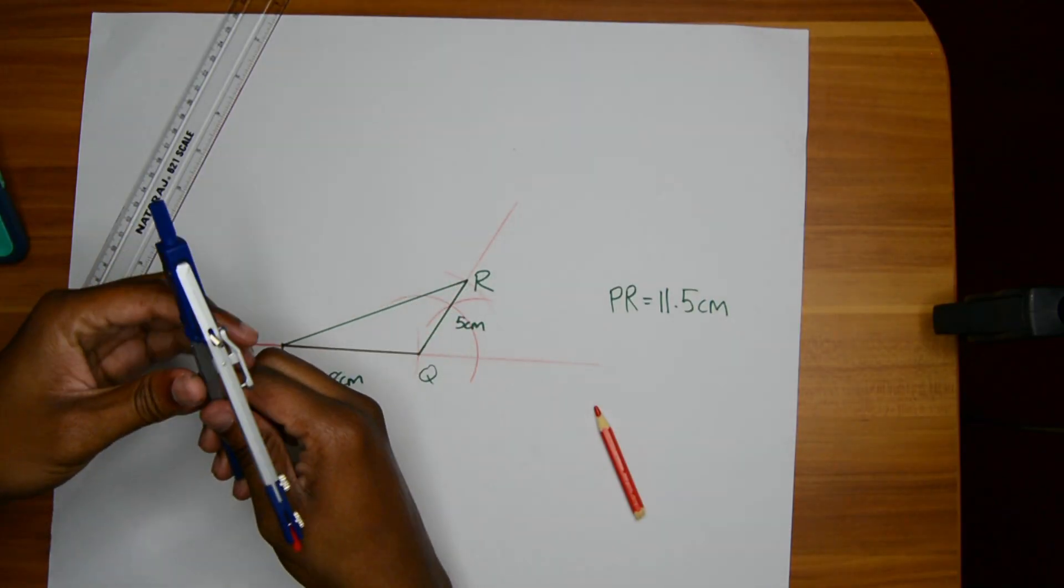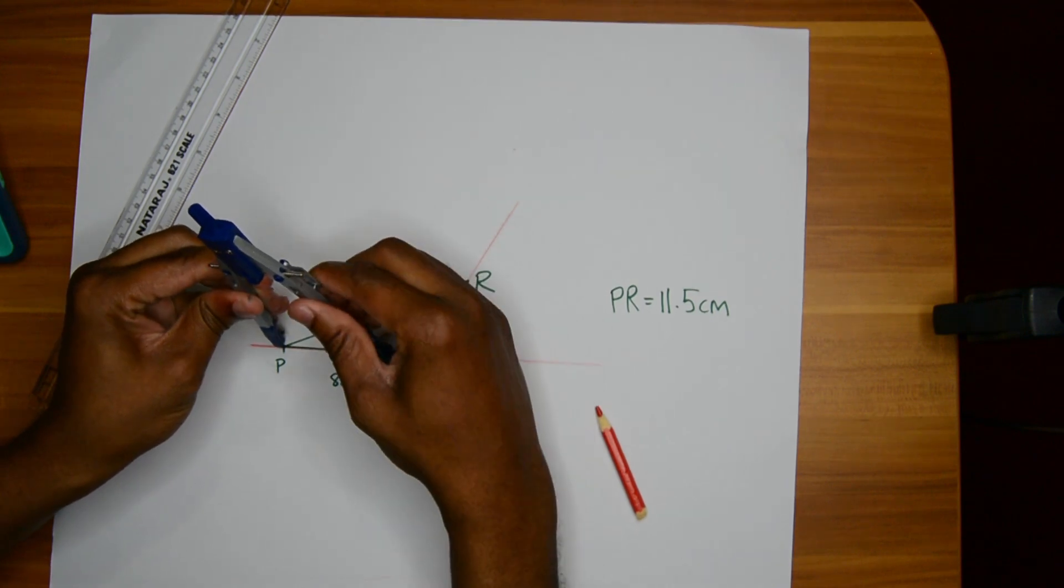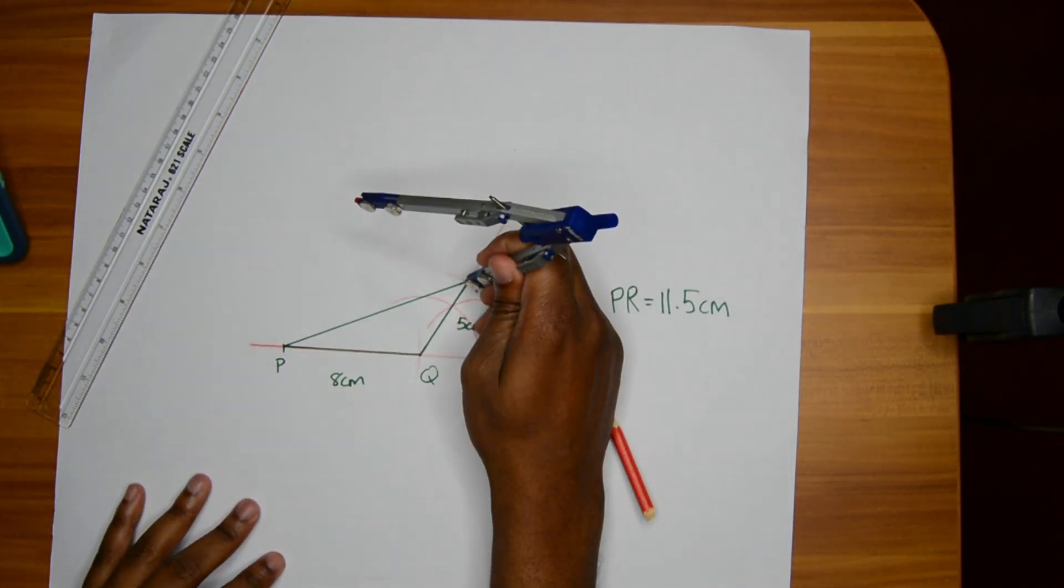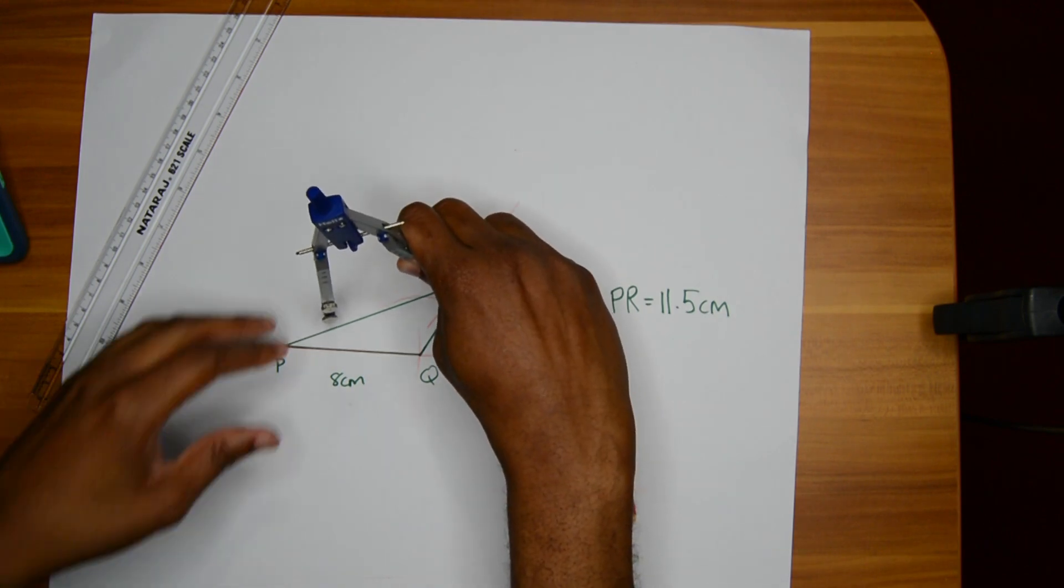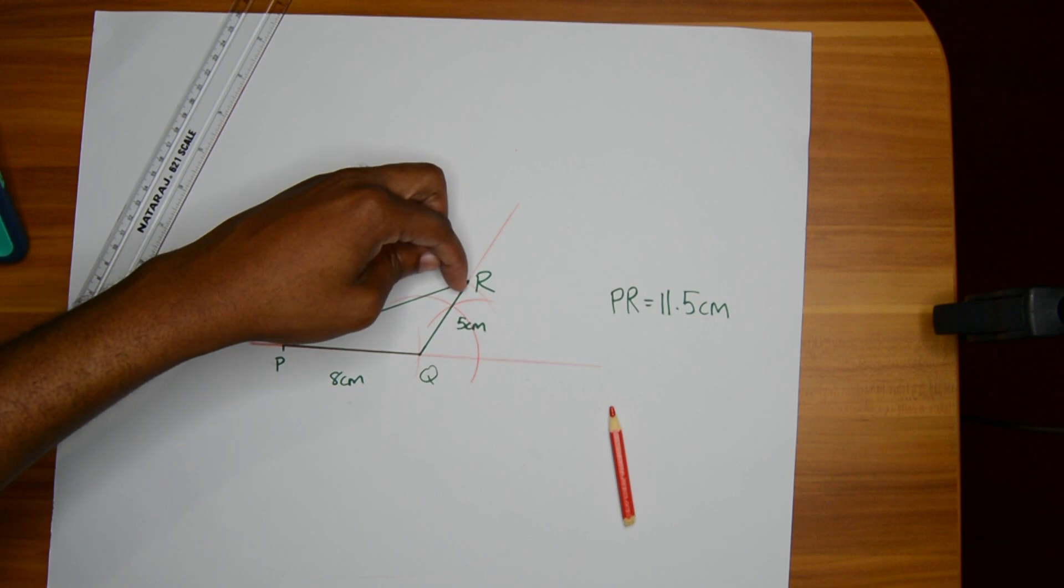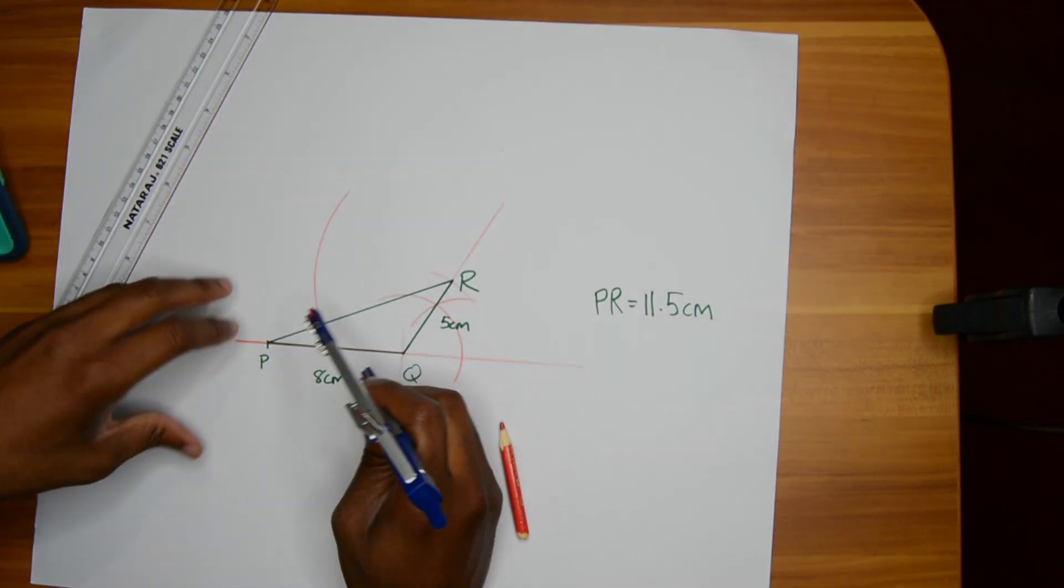What we need to do here is come from P to Q, get back that length which was 8, and we need to come from R and make a nice little arc here. So anything along this arc is 8 centimeters to R.